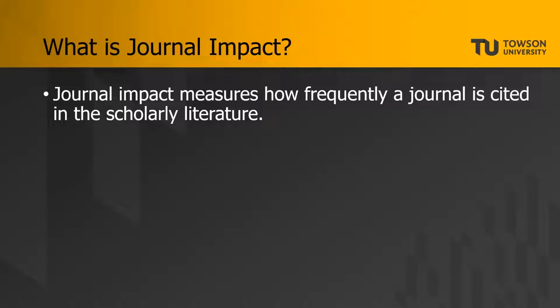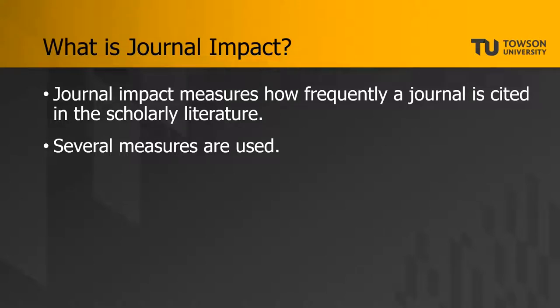Several metrics are used to measure the impact of an academic journal. They use different methods for calculating impact, but they are all based on how frequently articles published in that journal are cited.